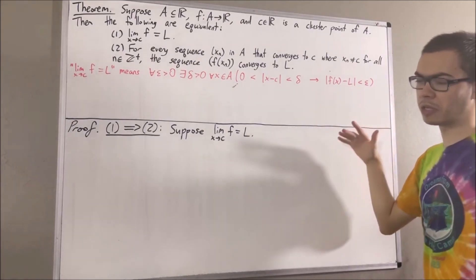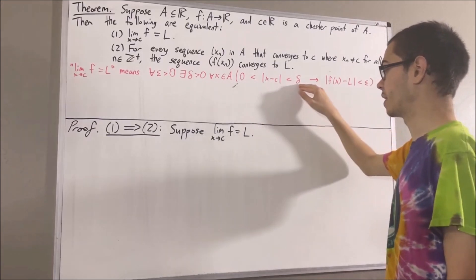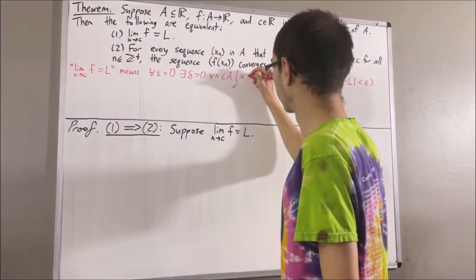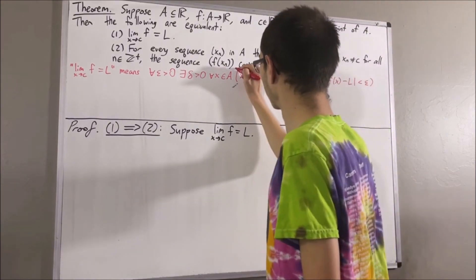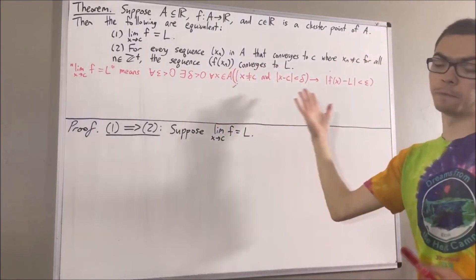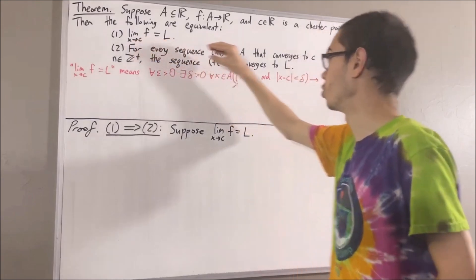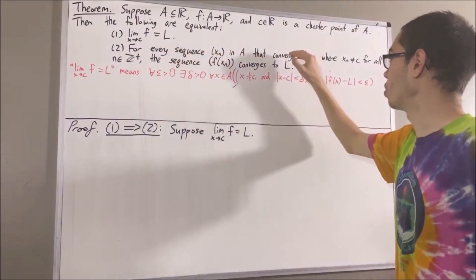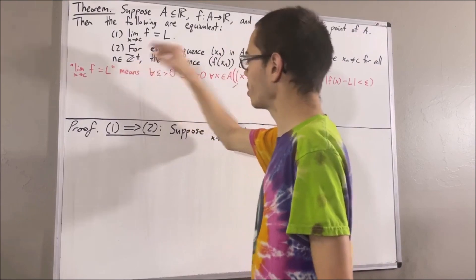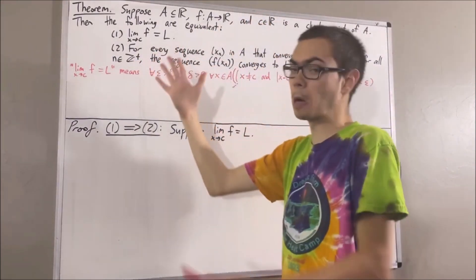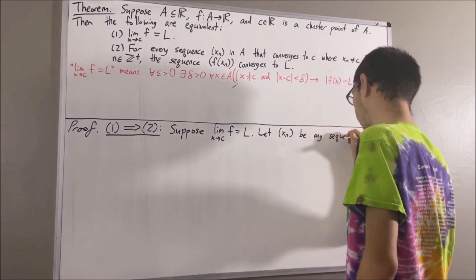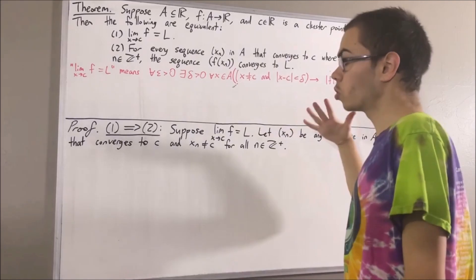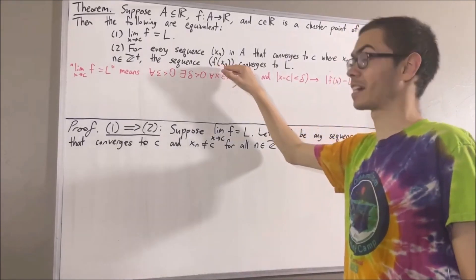It turns out it's going to be more convenient if we re-express this as: absolute value of X minus C is less than delta, and X is not equal to C. This is equivalent to what we had before. Our whole goal is to prove that two is true. We're trying to prove a statement about every sequence in A with this property, so let's give ourselves an arbitrary sequence in A with this property — we'll call it Xn. The whole goal from here is to show that the sequence F of Xn converges to L.